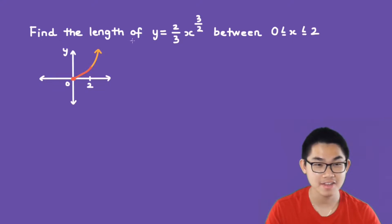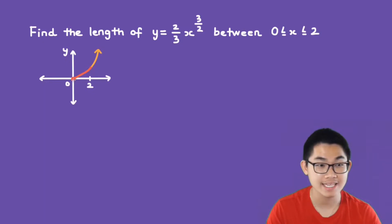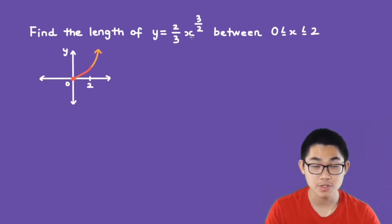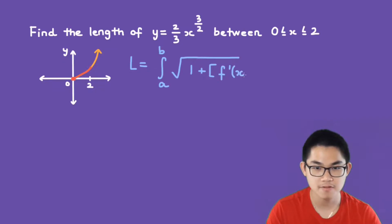Let's find the length of the function y equals 2 over 3 times x to the power of 3 over 2 between 0 and 2. So this is what the function looks like, but they only want us to find the length between 0 and 2, which is basically the orange part. The first thing I'm going to do is write down the formula. Since this function is in terms of x, we're going to use L equals the integral from A to B of the square root of 1 plus f prime of x to the power of 2, dx.